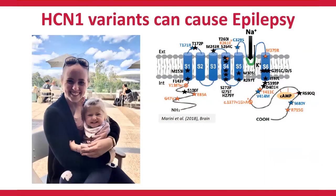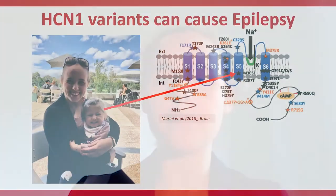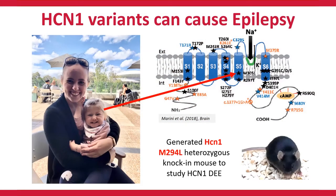A number of variants in HCN1 have been shown to cause epilepsy, including HCN1-M305L, which is Ebony's variant. However, before our study, very little was known about how these mutations caused epilepsy. In order to fill in this gap, we made the first mouse model of HCN1 epilepsy: the HCN1-M294L heterozygous knock-in mouse, which carries the mouse version of Ebony's epilepsy mutation, and we used this mouse to study how HCN1 variants cause epilepsy.